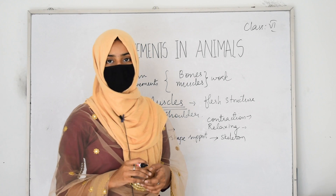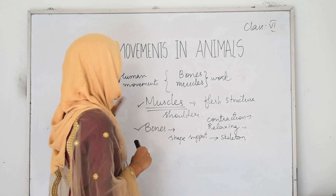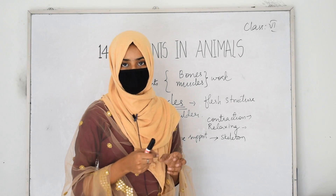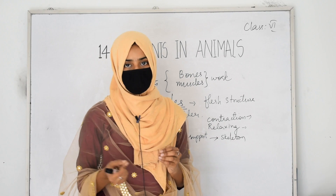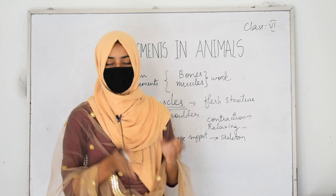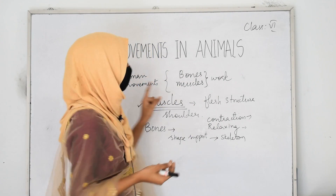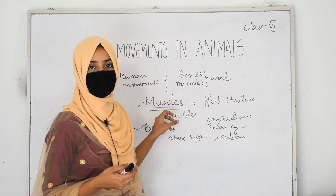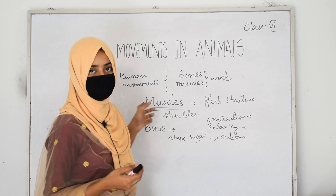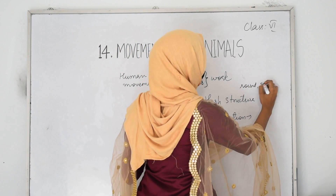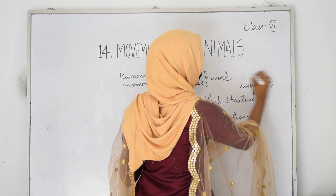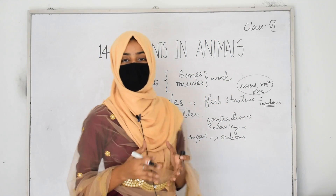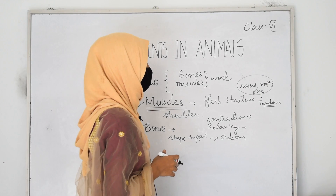Muscles are attached to the bones. Just as we need glue to paste paper on cardboard, muscles also need some material to get attached to bones. That material is a round, soft, fiber-like structure. These fiber-like structures are called tendons. Tendons are rope-like fibers that connect muscles with bones.